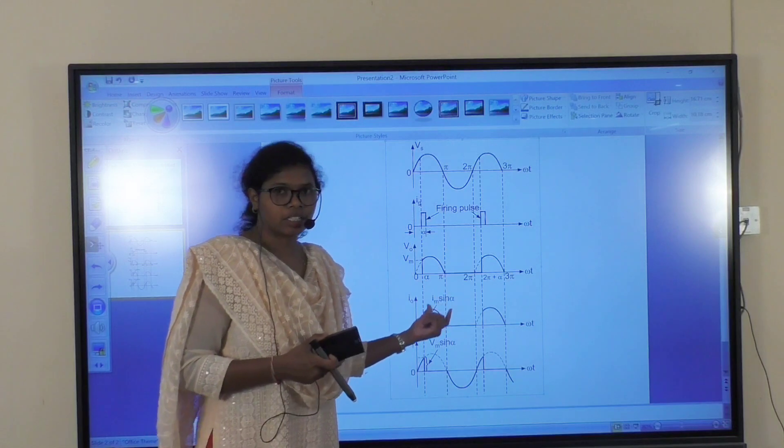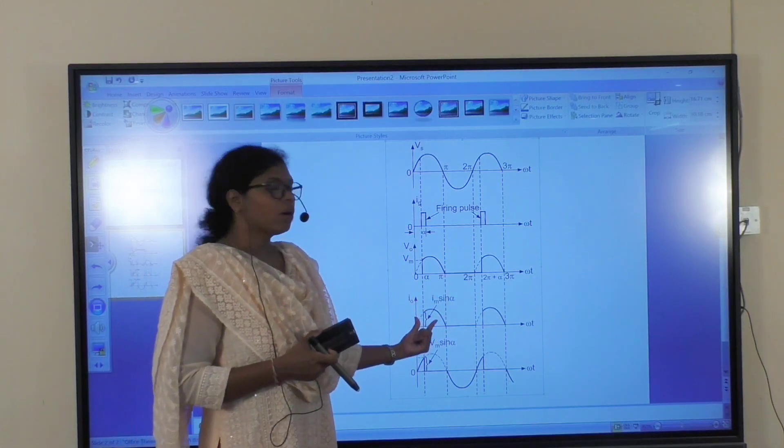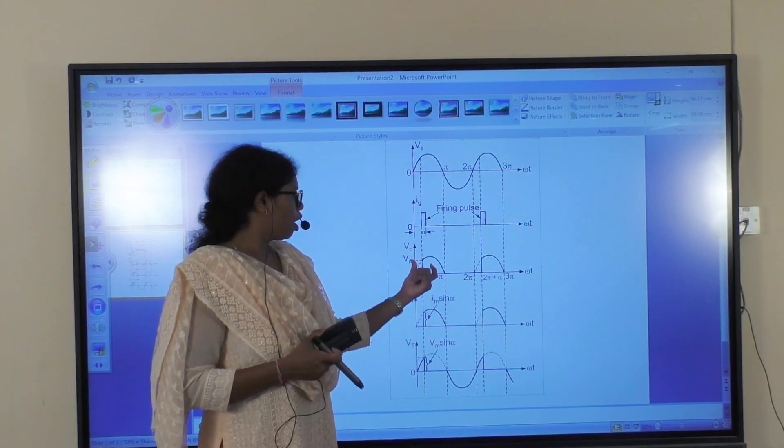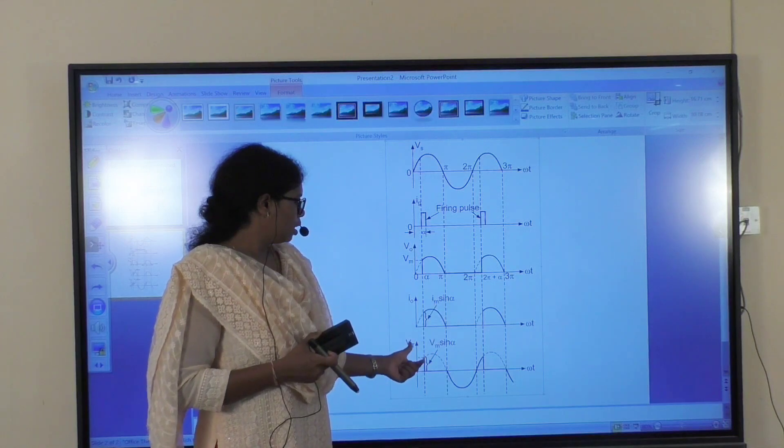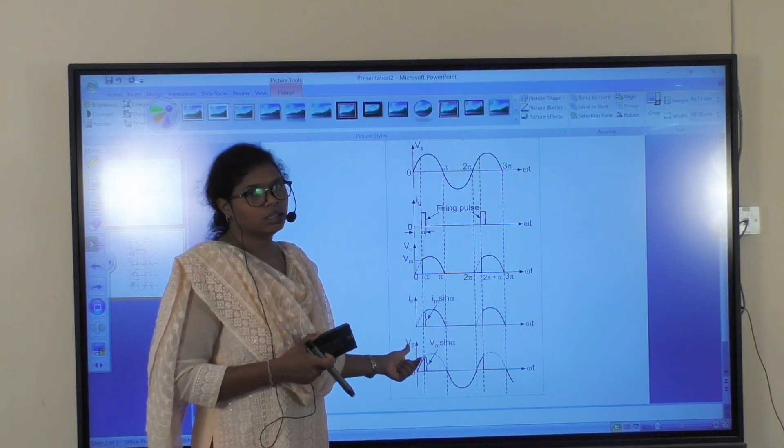As it is a resistive load, the waveform of output current is equal to output voltage. And VT is the voltage drop across the thyristor.